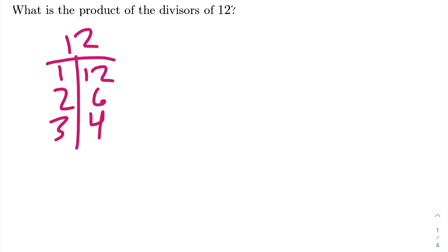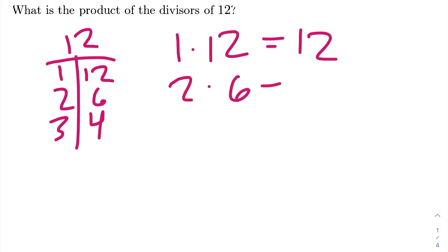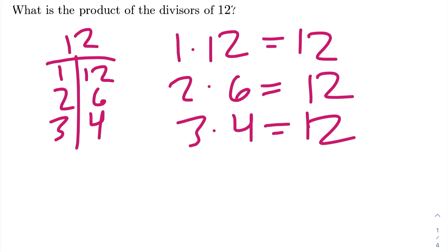We notice that 1 and 12, 2 and 6, and 3 and 4 are all factor pairs of 12. A factor pair of a number means that the product of those two factors is equal to the number they are a factor of. In other words, 1 times 12 is equal to 12, 2 times 6 is equal to 12, and 3 times 4 is equal to 12, because these are all factor pairs of 12.